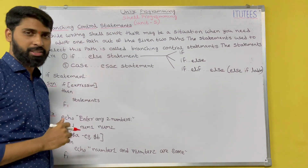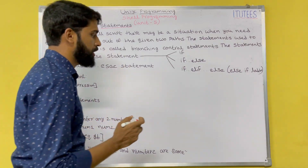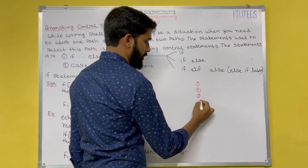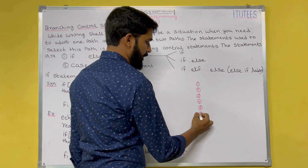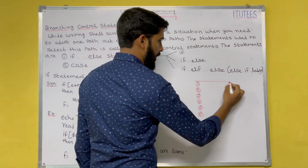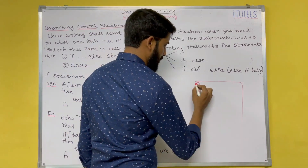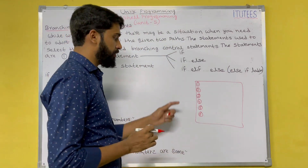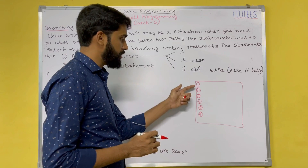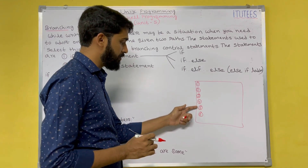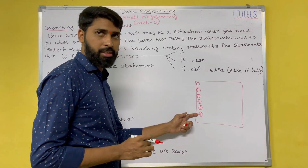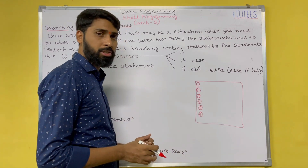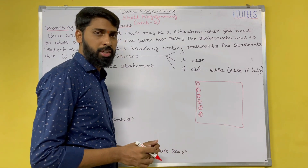What is branching? Normally we write the program in a sequence of instructions. For example, I write 6 instructions as one shell script. Execution starts from the 1st line, 2nd, 3rd, 4th, 5th, and 6th. We are going to complete all these 6 instructions to execute this shell script.